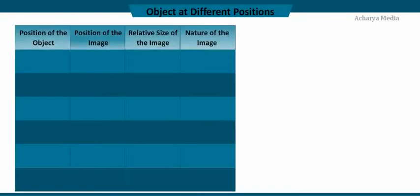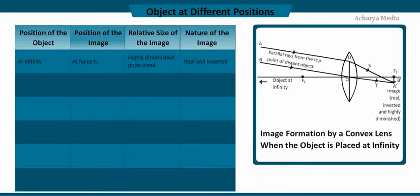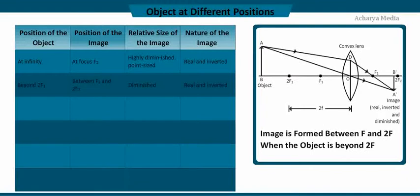The ray diagrams for image formation in a convex lens for a few positions of the object are shown in the figure. When the object is at infinity, all the rays from the object are parallel when they strike the lens; the image formed is smaller than the object, real and inverted. When the object is beyond 2F1, the parallel ray from the object after refraction passes through the focus, and another ray passes undeviated. The two rays form an image between F2 and 2F2 on the other side; the image is real, inverted, and smaller than the object.